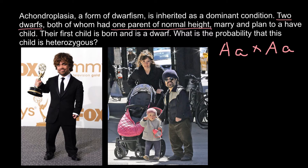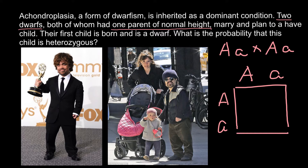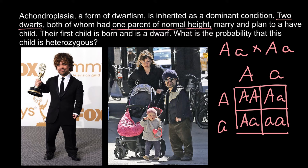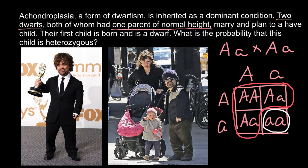We can build a simple Punnett square — it doesn't matter which gender is on top or on the side. Both parents are heterozygous. We can determine the probability that they would have a normal or affected child. This is not a sex-related genetic disorder. The child who is homozygous recessive would be of normal height, and those belonging to any of the other genotypes would show this form of dwarfism.